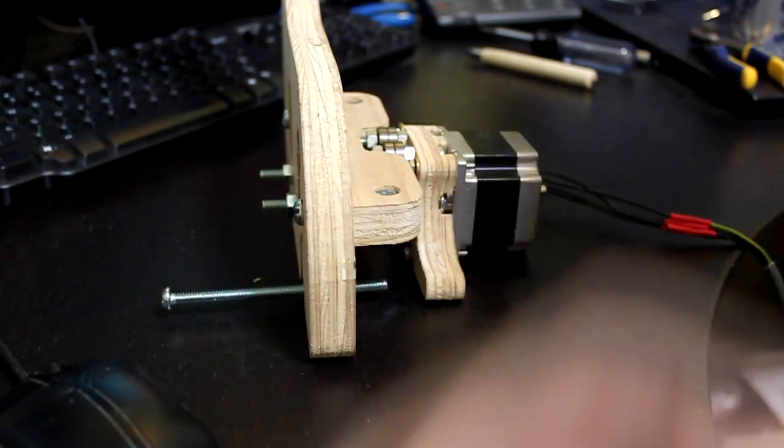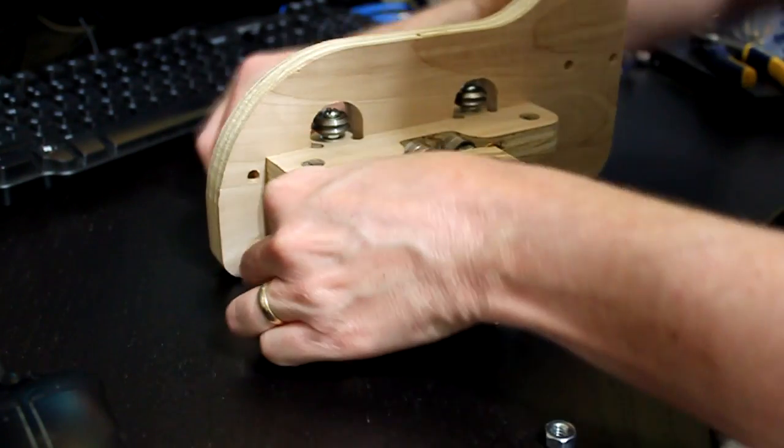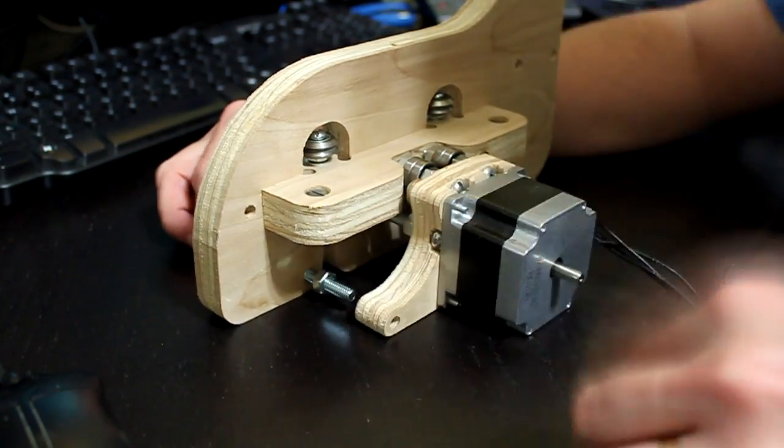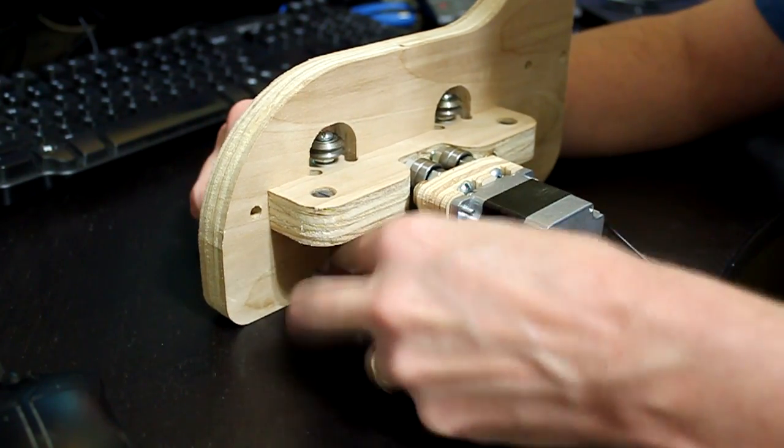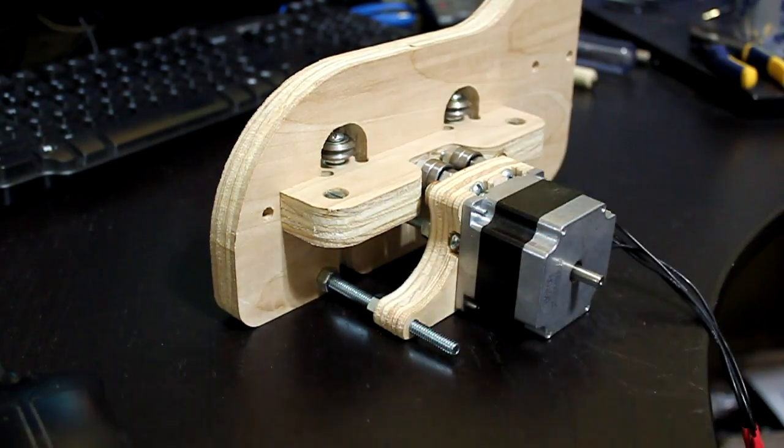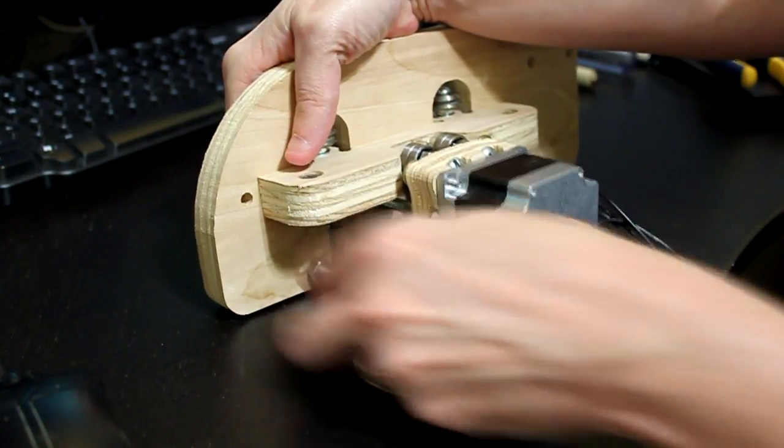Two final screws need to be inserted into this assembly to provide extra support. These two screws are quarter inch by three and a half inches long. Two nuts will be needed between the motor assembly and the structural side.